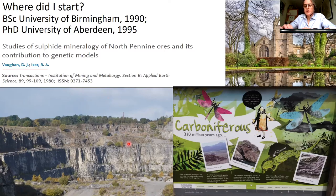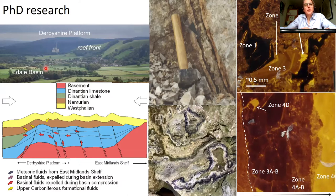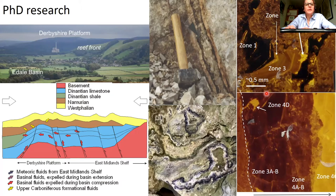Specifically I was looking at calcite cements intergrown with barite, fluorite, and galena mineralization hosted on the platform. Those of you from the UK will know Castleton — this is the paleo-reef front of the Carboniferous platform. In the basin we have a succession of clastic sedimentary rocks which sourced the fluids that were expelled onto the platform via faults and fractures and precipitated these minerals. I spent the best part of three and a half years analyzing in detail all of the calcite cements, essentially supporting the model that sedimentary basinal fluids were expelled very quickly during the Variscan orogeny through faults and fractures onto the platform, leading to mineralization.